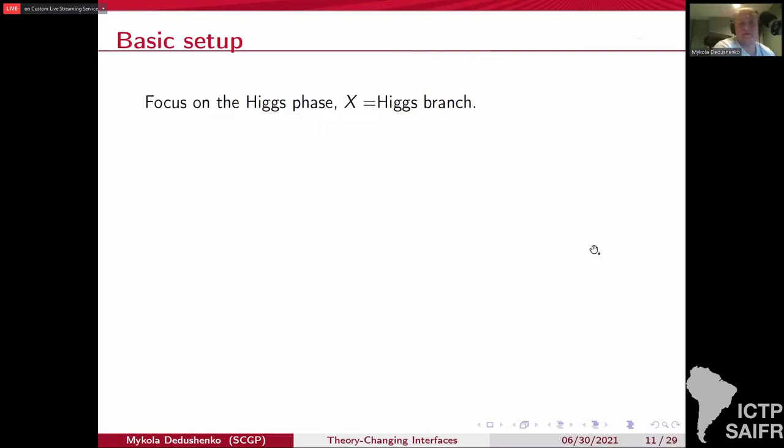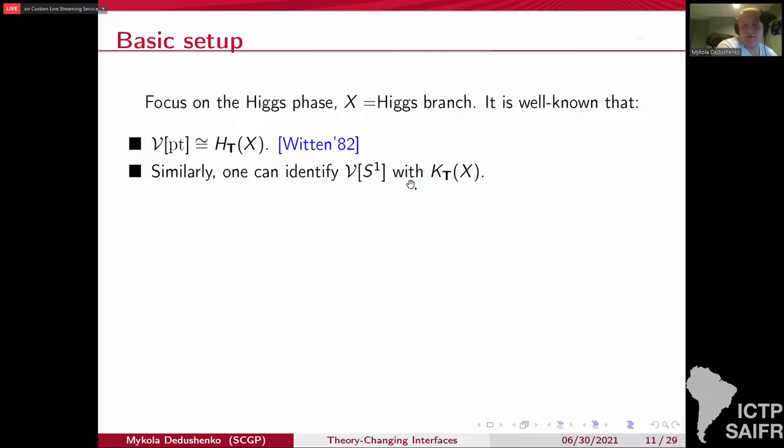Now let's focus on the theory in Higgs phase. Let X be the Higgs branch. We know that the space of supersymmetric vacuum in the quantum mechanical case is given by the cohomology. In our case, the equivariant cohomology. That goes back to Witten's paper on Morse theory. Now, when we work with our specific Q and go to two dimensional case, it is natural to identify the space of vacua with the equivariant K theory. And then three dimensional case, it's related to the elliptic cohomology.